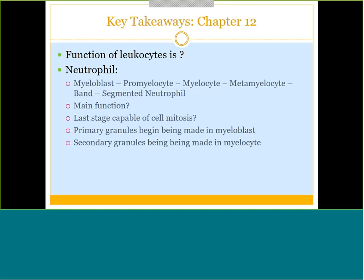In the neutrophil cell line, the last stage capable of cell mitosis is the myelocyte stage. Neutrophils are granulocytes with several types of granules. Primary granules start being made right away at the myeloblast stage, and secondary granules begin being made at the myelocyte stage. For more information on these stages, go back to the lecture PowerPoint.